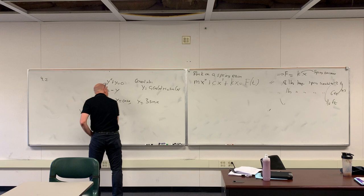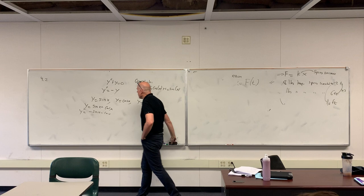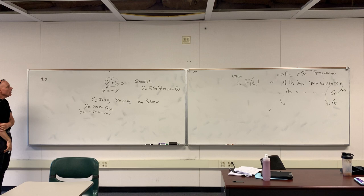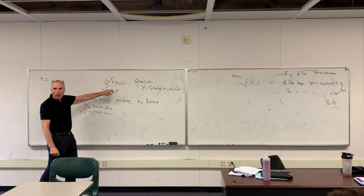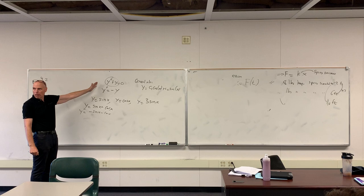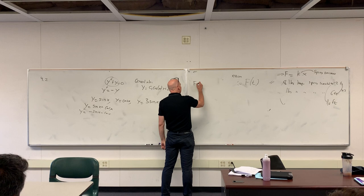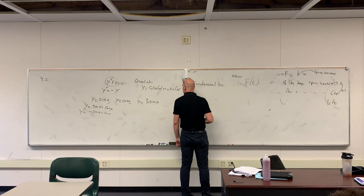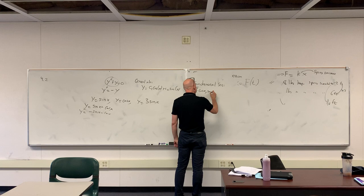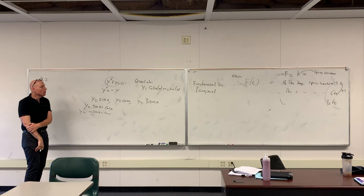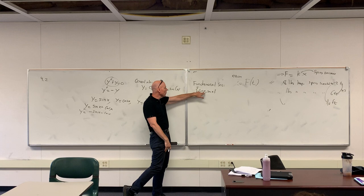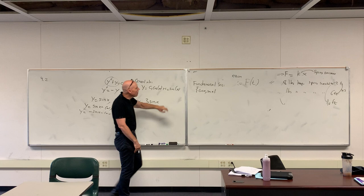Using the linear algebra words: this is like an operator that takes functions as input and gives other functions as output. Finding solutions where this equals zero is finding the null space or kernel of that operator. That's a subspace, which means it has a basis. The two basic building blocks of this differential equation - cosine x and sine x - we call that the fundamental set. All solutions to this differential equation are linear combinations of those two.